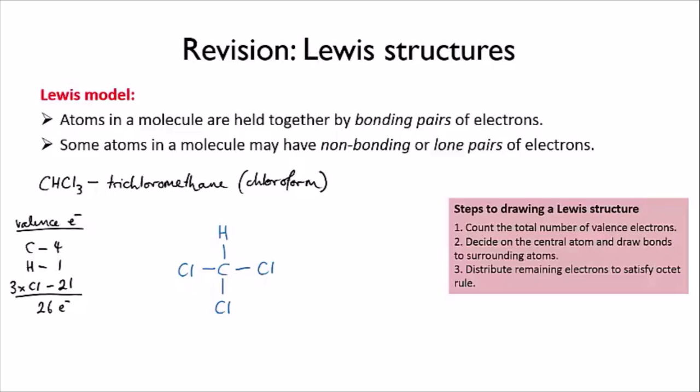Each of the chlorines, however, only has access to two electrons at the moment from the bond, so they need some lone pairs to get a full outer shell.